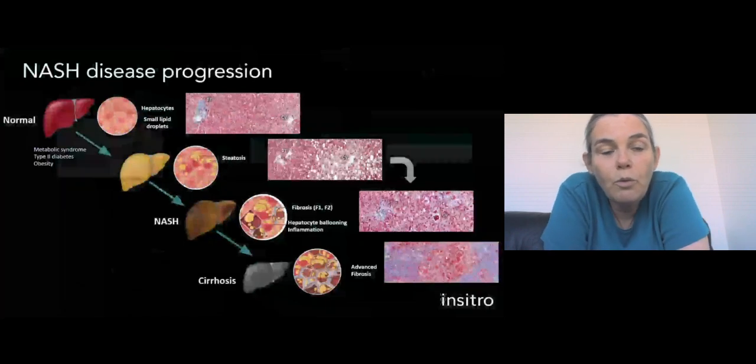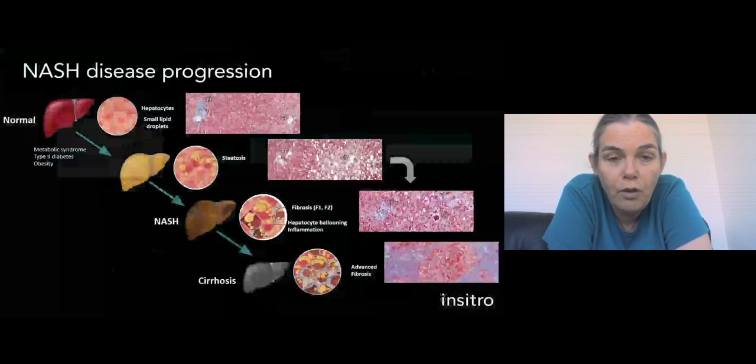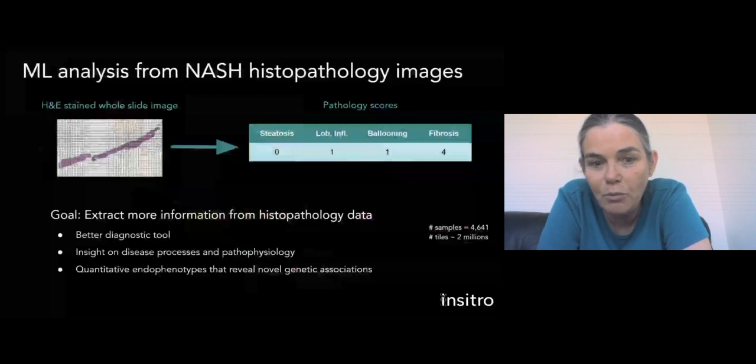So here we were working with histopathology images from liver biopsies of different patients. And these are taken using a needle biopsy. They're put on a slide and then they're stained using standard H&E. And then a pathologist looks at the entire slide and scores it on the four things that we talked about on the previous slide. Steatosis, inflammation, ballooning or the change in morphology in the hepatocytes and fibrosis. So that's four scores for a ton of data that you can see on the slide.